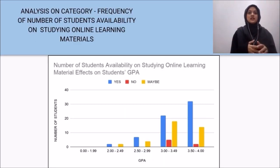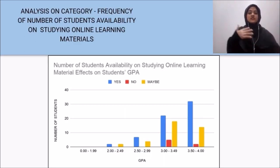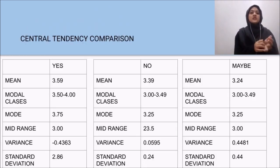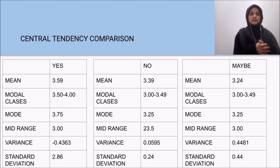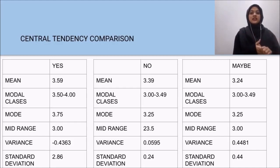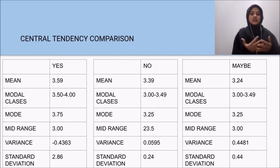Lastly, looking at the number of students' availability to study online learning materials and its effect on student GPA, comparing the mean, mode, mid-range, variance, and standard deviation, students who can study online learning materials score higher than those who cannot or are uncertain about their ability to study online.